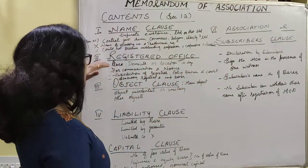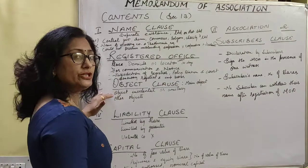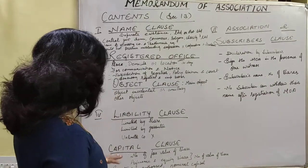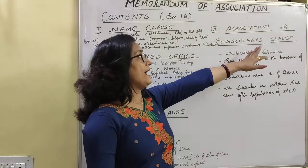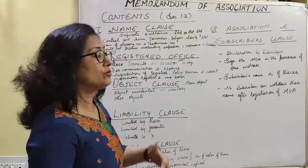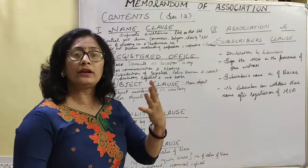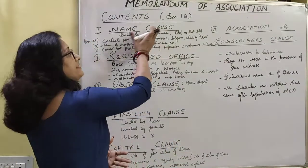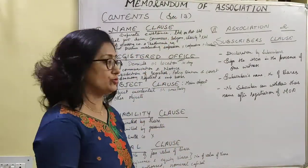The six parts are: Name clause, Registered Office clause, Object clause, Liability clause, Capital clause, and Association and Subscription clause. These are the 6 clauses which are included in the content of Memorandum of Association.